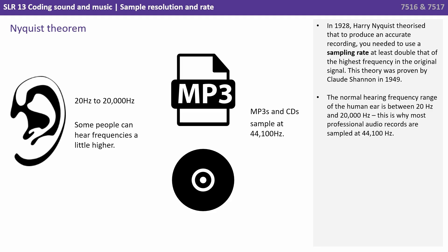In 1928, Harry Nyquist theorised that to produce an accurate recording you needed to use a sampling rate at least double that of the highest frequency in the original signal. This theory was proven by Claude Shannon in 1949. The normal hearing frequency range of the human ear is between 20 to 20,000 hertz, and this is why most professional audio records are sampled at 44,100 hertz.